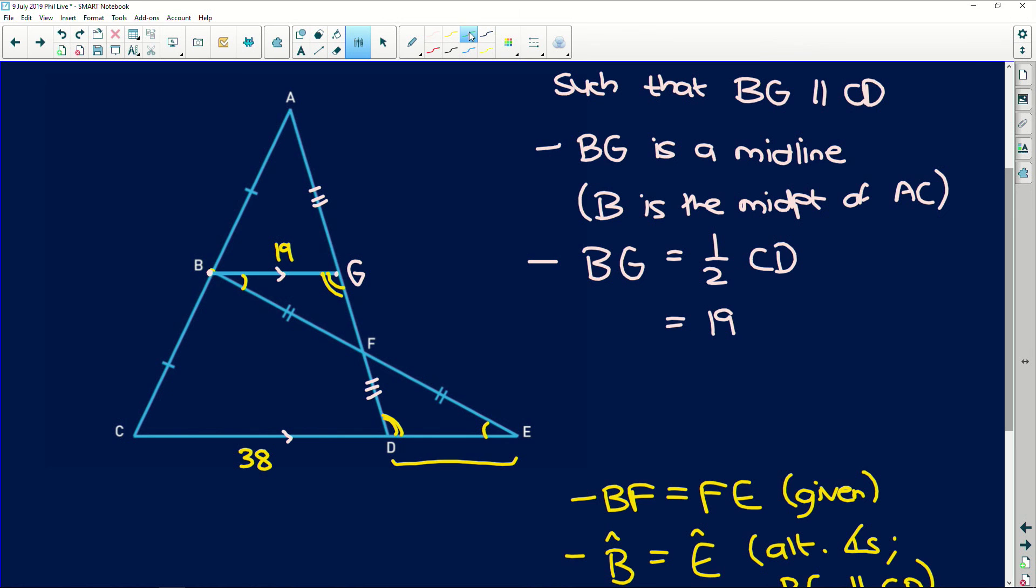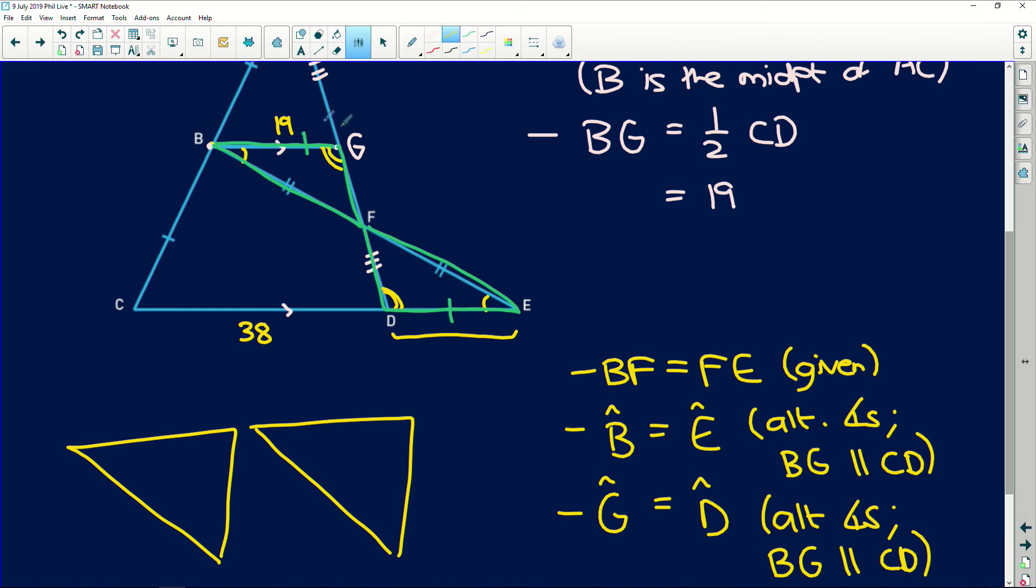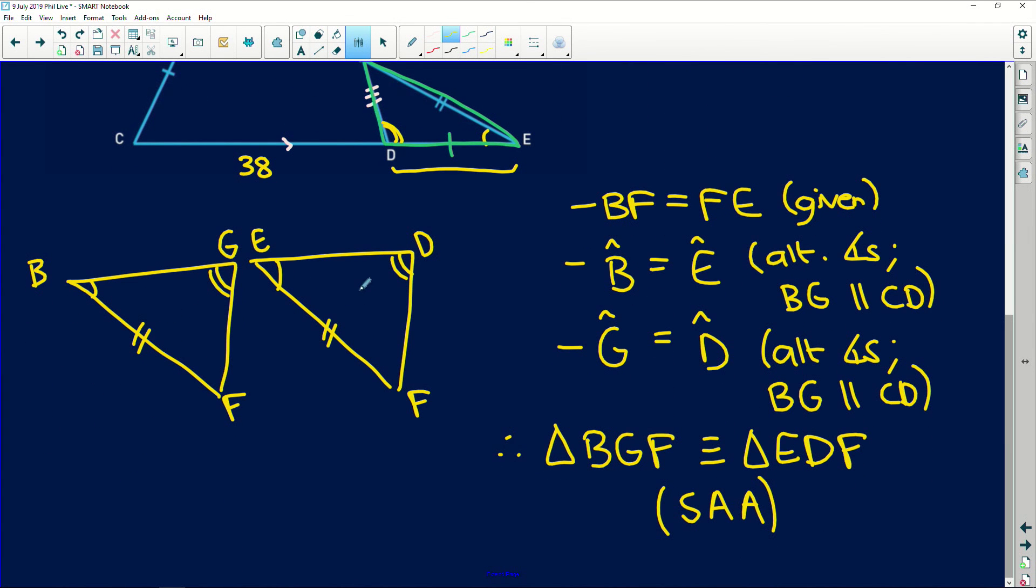So now that we've proved that these two triangles here, this BGF and EDF are congruent, we know that the corresponding sides are equal to each other. BG is equal to ED. Why? Because if we have two triangles, I'm going to redraw them so that they sit with the right orientation. So if we take it from this triangle here, we've got BGF with angle B equal to angle E. So E sits over here. Angle F is equal to angle F. So F sits there. And angle G over here was equal to angle D. And remember, these lengths were given as equal BF and FE. So now if we have exactly the same triangles over here, it means that this side is equal to this side. GF is equal to DF. And also that BG is equal to ED.